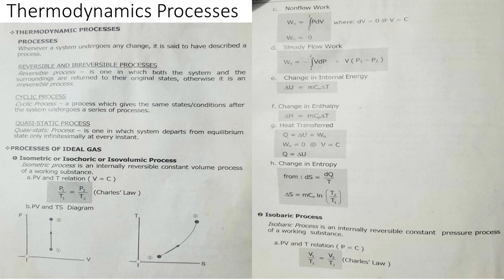Steady flow work is negative integration from limit 1 to 2 of V dP. Integrating with respect to pressure, steady flow work equals V times quantity P1 minus P2. Change in internal energy, since it is constant volume, is equal to mCv delta T. Change in internal energy is always equal to mCv delta T. Heat transfer Q is equal to change in internal energy plus non-flow work. Since non-flow work is 0 at constant volume, thus heat transfer equals change in internal energy.